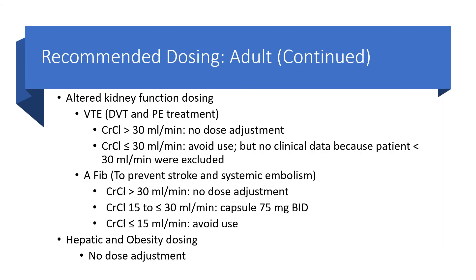For renal function dosing in VTE: if creatinine clearance is greater than 30 mL/min, no dose adjustment. If creatinine clearance is less than or equal to 30 mL/min, avoid use. For AFib: if creatinine clearance is greater than 30 mL/min, no dose adjustment. If creatinine clearance is 15 to 30 mL/min, give 75 mg twice a day. If creatinine clearance is less than or equal to 15 mL/min, avoid use. For hepatic dosing, there is no dose adjustment.